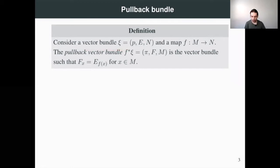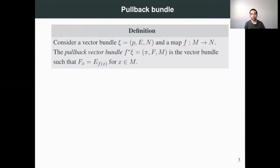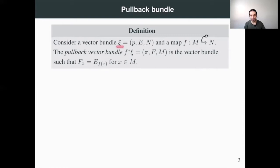Consider a vector bundle ψ with projection p over E and N, where N is the base space of our vector bundle, and let f be a continuous map from M to N. The pullback vector bundle is defined over M, the domain of the map f. The fiber of the pullback over a point x in M is just the fiber of the vector bundle ψ over the point f(x).